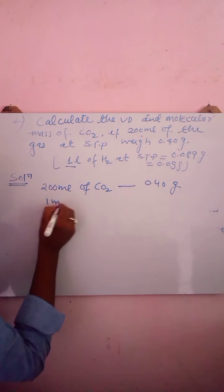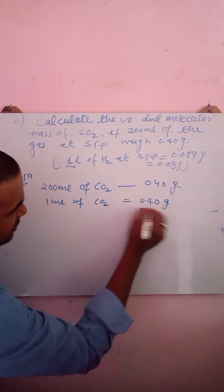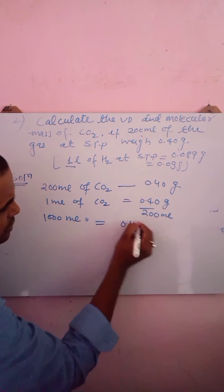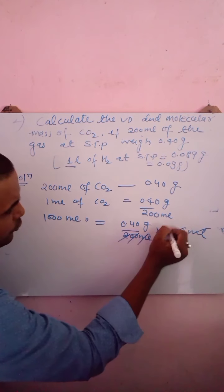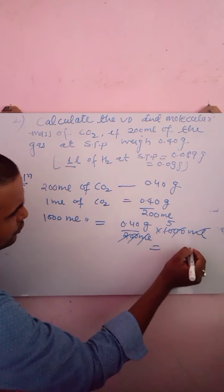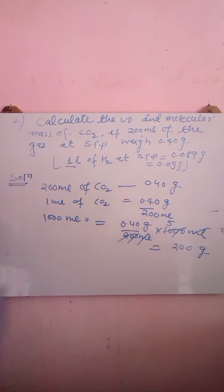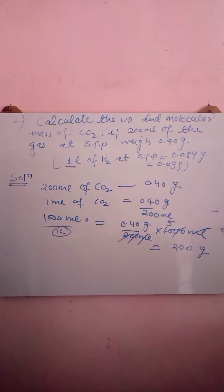It is given that 200 ml of CO₂ weighs 0.40 grams. So 1 ml of CO₂ weighs 0.40 divided by 200. Therefore 1000 ml (1 liter) of CO₂ weighs 0.40 divided by 200, multiplied by 1000, which equals 2 grams.